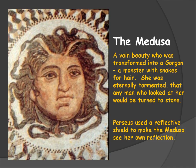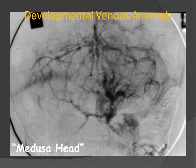Classically, the DVA or venous angioma was described as having a Medusa head appearance. The Medusa was a vain beauty who was transformed into a Gorgon, a monster with snakes for hair. She was transformed because she was so vain, but she was eternally tormented that any man who looked at her would be turned to stone.